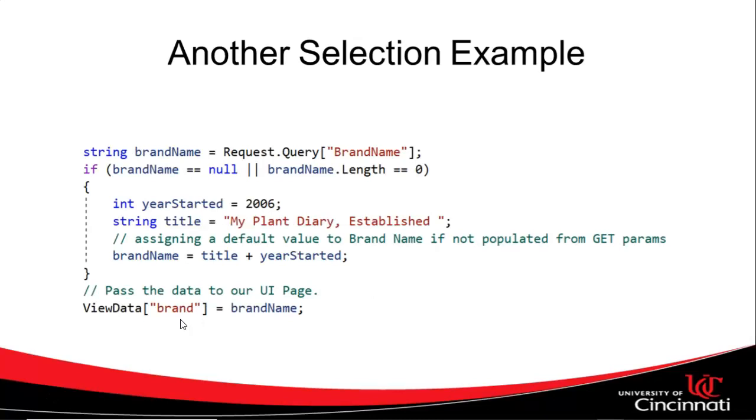So a selection example. Here's an example from our project where we just start things up and we're grabbing a brand name from a URL string. In other words, the name value pairs that you see in a get request, we're grabbing one called brand name. But we want to use a default value if the brand name is empty. So we grab the brand name and the first thing we do is we say, is the brand name equal to null?